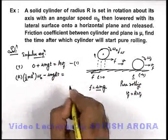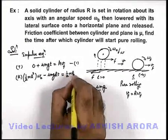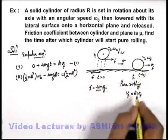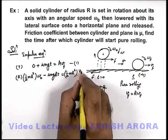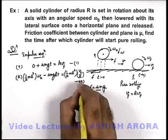Which is equal to the final angular momentum which can be written as half m r square into the final angular speed omega, which can be written as vf by r as pure rolling will start after time t. This is our equation number two.